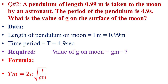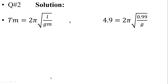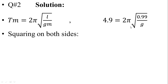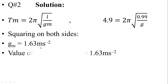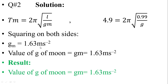Required: find the value of g on the Moon, gm equals question mark. We write the formula of time period: tm equals 2π times square root of L over gm. Putting the values: 4.9 equals 2π times square root of 0.99 over gm. Taking the square on both sides and solving, gm is equal to 1.63 meters per second squared. Result: the value of g on the Moon gm equals 1.63 meters per second squared.